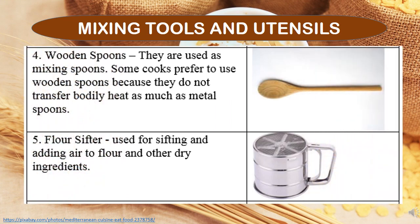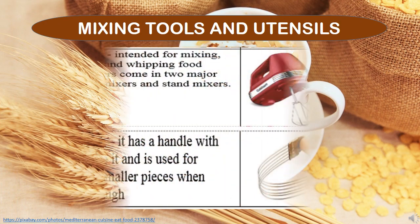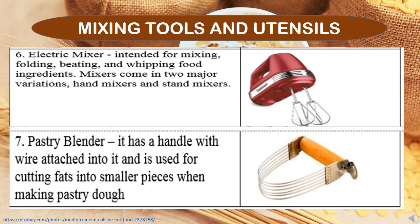The wooden spoon is used as a mixing spoon. Some cooks prefer wooden spoons because they do not transfer bodily heat as much as metal spoons. The flour sifter is used for sifting and adding air to flour and other dry ingredients. The electric mixer is intended for mixing, folding, beating, and whipping food ingredients. Mixers come in two major variations: hand mixers and stand mixers.